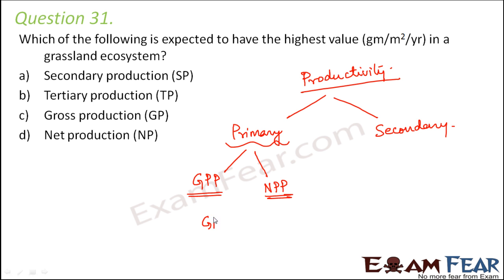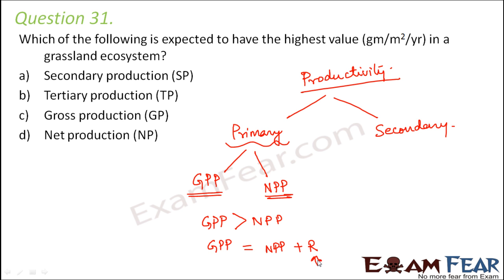Gross is the total biomass synthesized by producers; net is the total biomass stored by producers after all expenses such as respiration. With this concept in mind, gross primary productivity will always be greater than net primary productivity. The relationship is: Gross Primary Productivity = Net Primary Productivity + R, where R represents expenses on activities like respiration.